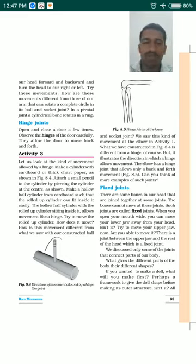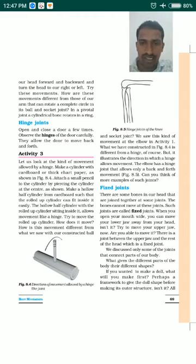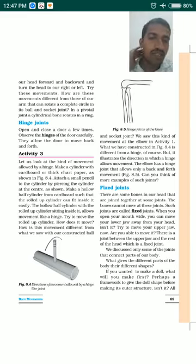In the pivot joint, a cylindrical bone rotates in a ring. There is a cylindrical-shaped bone present between the neck and the head, and this cylindrical bone rotates within a ring shape. That is why we are able to move our head forward, backward, and turn it left and right.